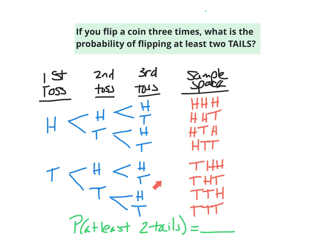Here's my tree diagram and this is my sample space — these are all my possible outcomes. The question is: if you flip a coin three times, what is the probability of flipping at least two tails?